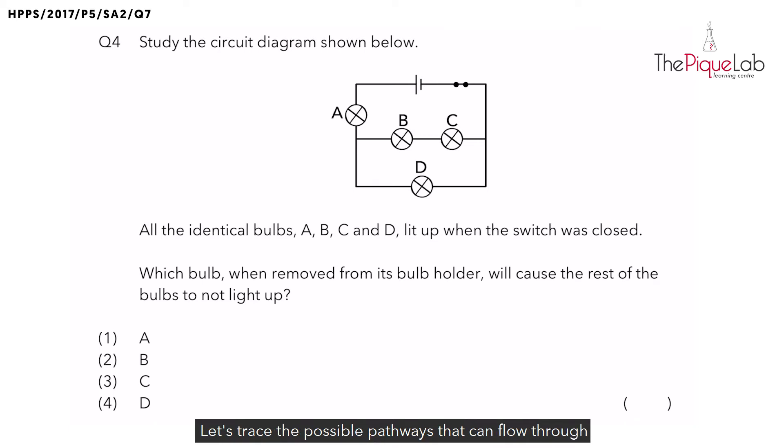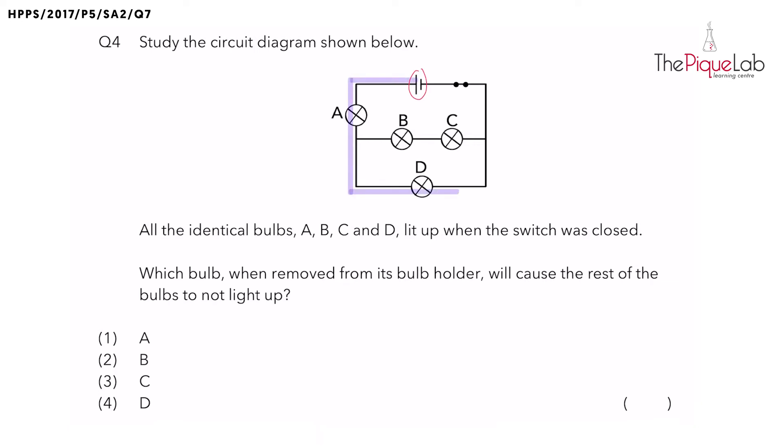Let's trace the possible pathways that electricity can flow through this circuit to make all the bulbs light up. Remember electricity is produced by the battery. So we start drawing one possible pathway that electricity can flow through the wires and electricity needs to flow back to the battery.